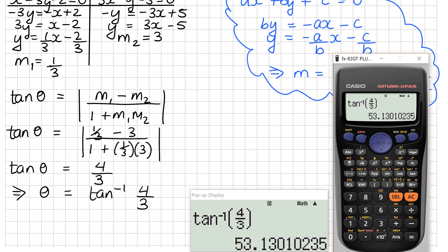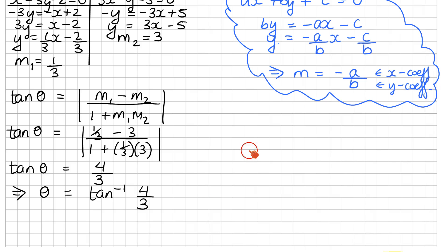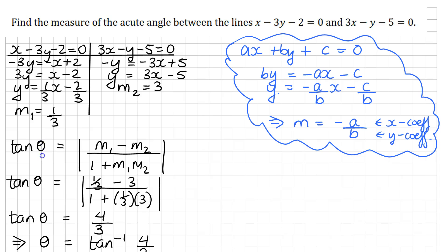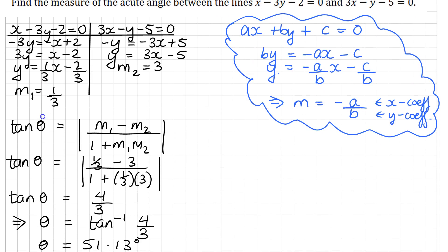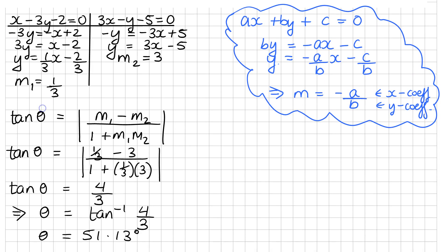So I just write that down — 53.13 degrees is theta. And just checking: we're not asked to get it to any particular number of decimal places, so that's it.